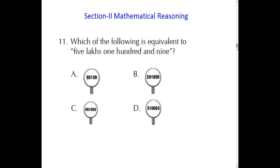The first question asks which of the following is equivalent to 5,109. So 5,109 — there is nothing in the thousands period, then 109. You have to find this number among the four options. Option A is 50,109. Option B is 5,109. Option C is 5,109 — it is in mirror image form, but it is still 5,109. So that is the correct answer.